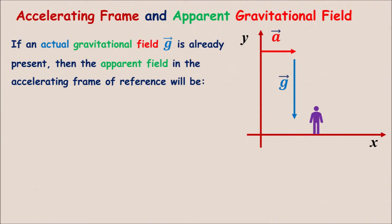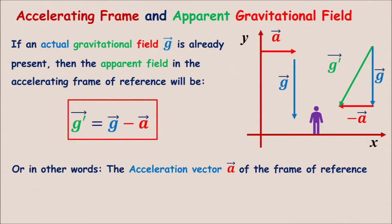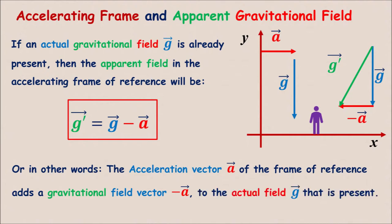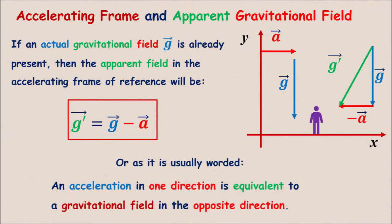If an actual gravitational field G is already present, then the apparent field in the accelerating frame of reference will be G prime equal to G minus A. Or in other words, the acceleration A of the frame of reference adds a gravitational field vector negative A to the actual field G that is present. Or as it is usually worded, an acceleration in one direction is equivalent to a gravitational field in the opposite direction.